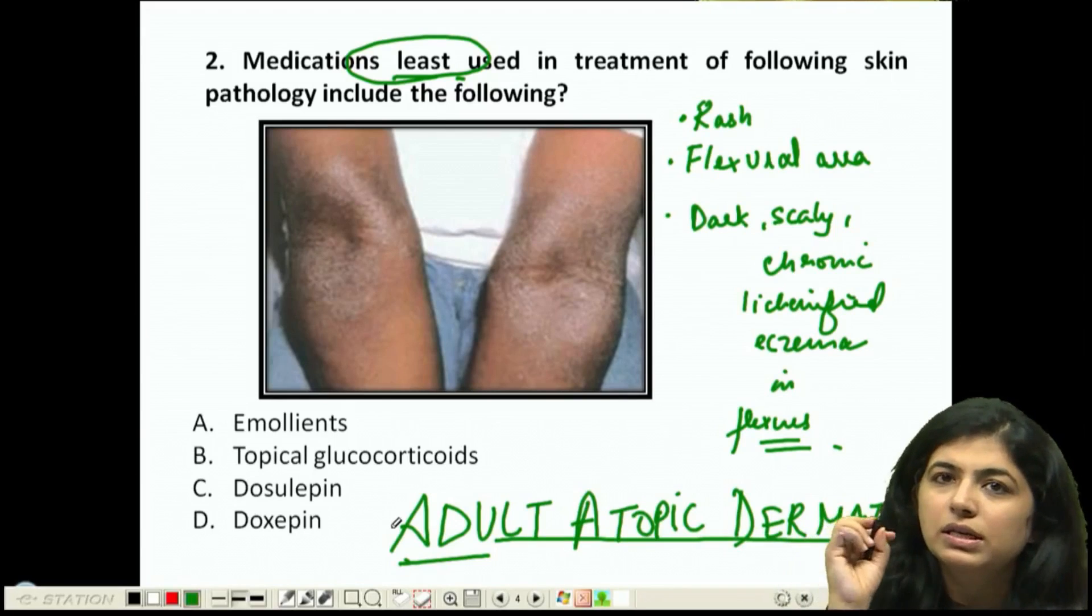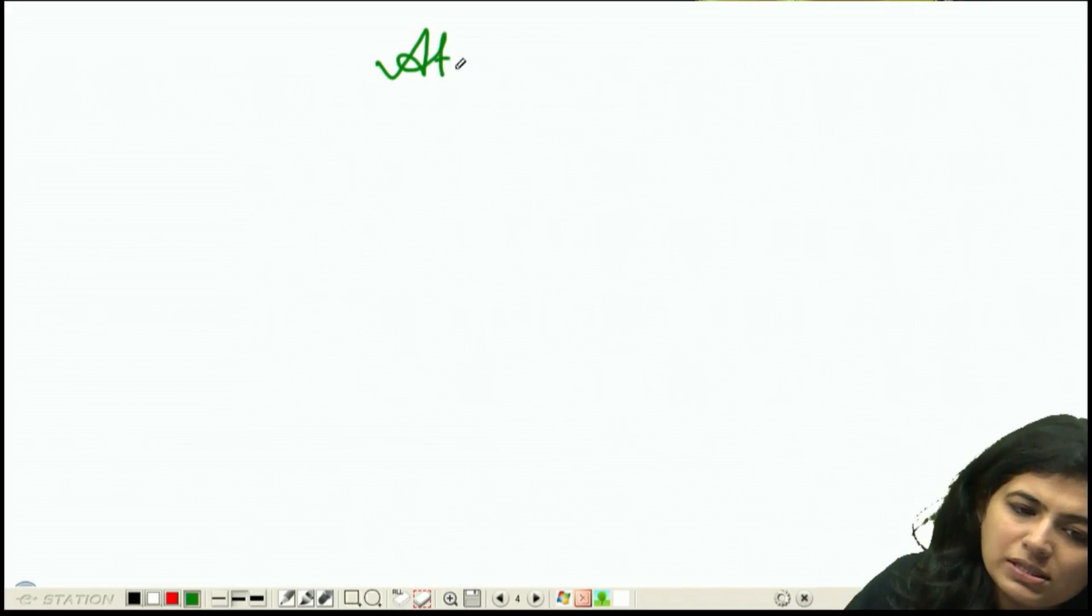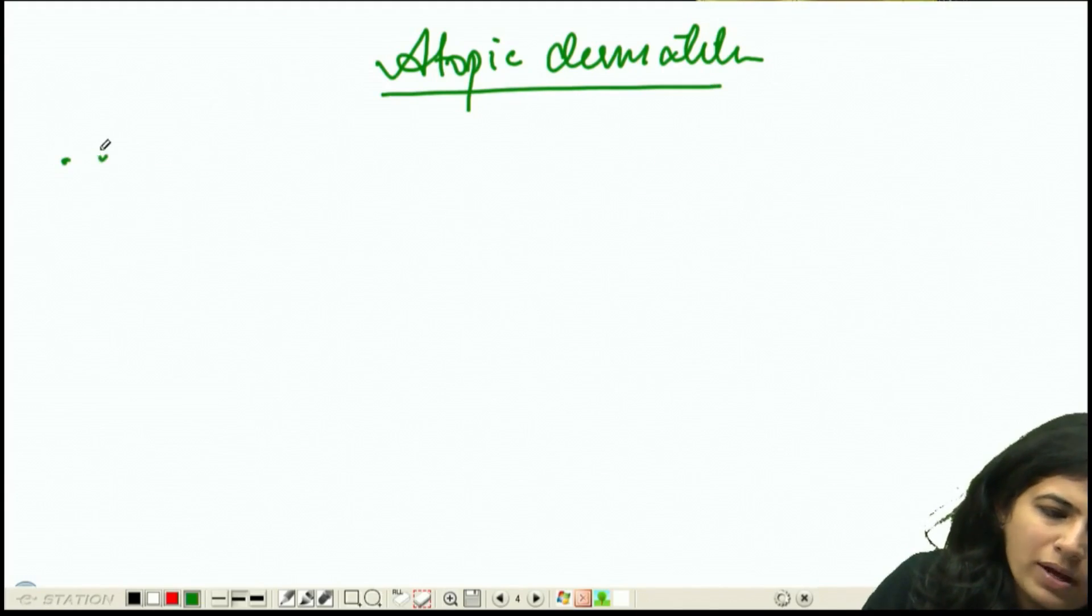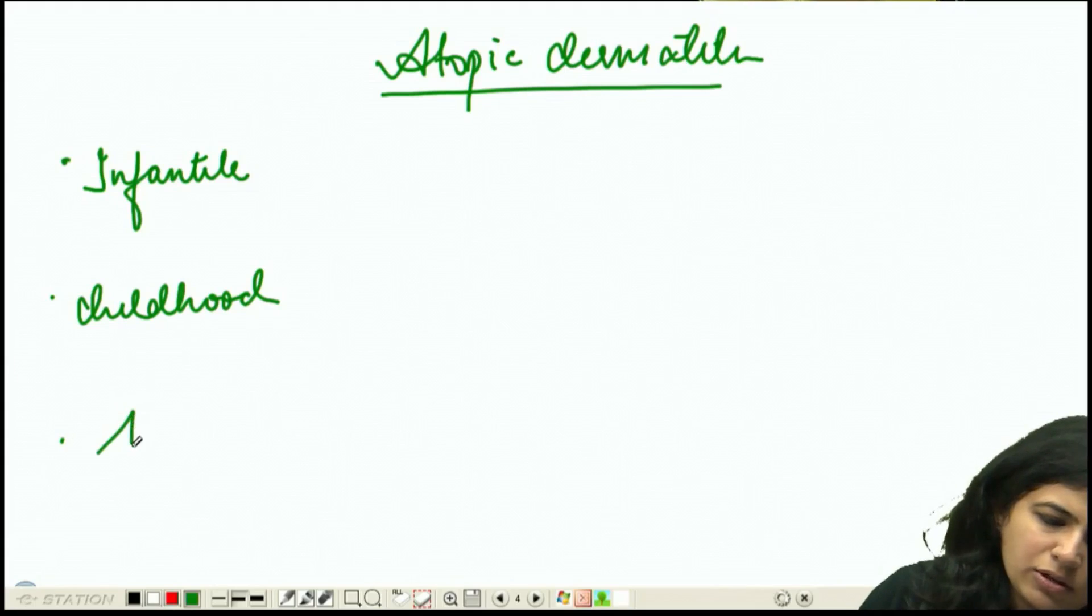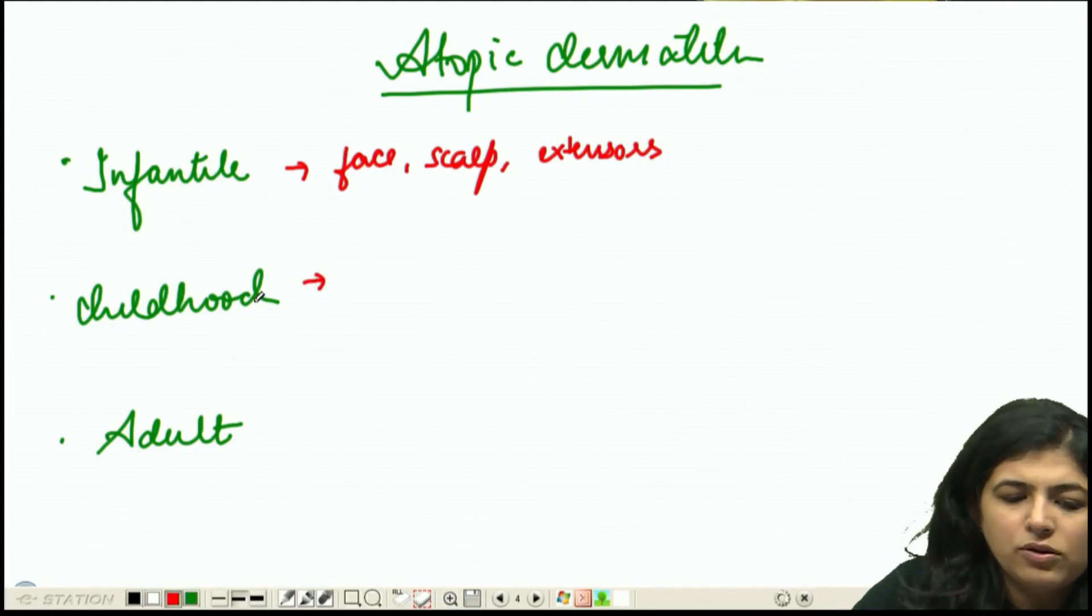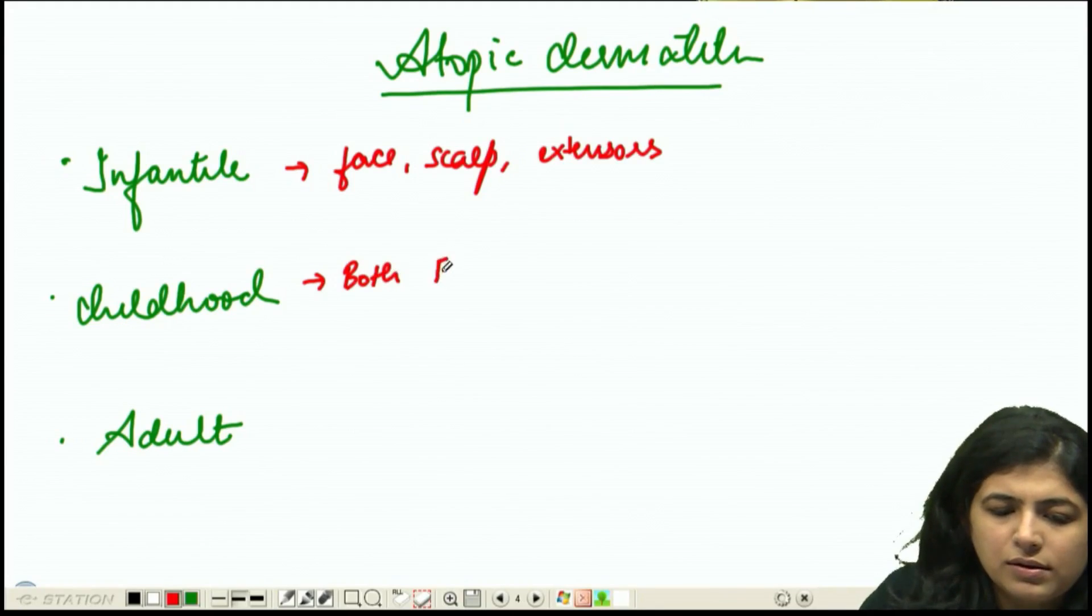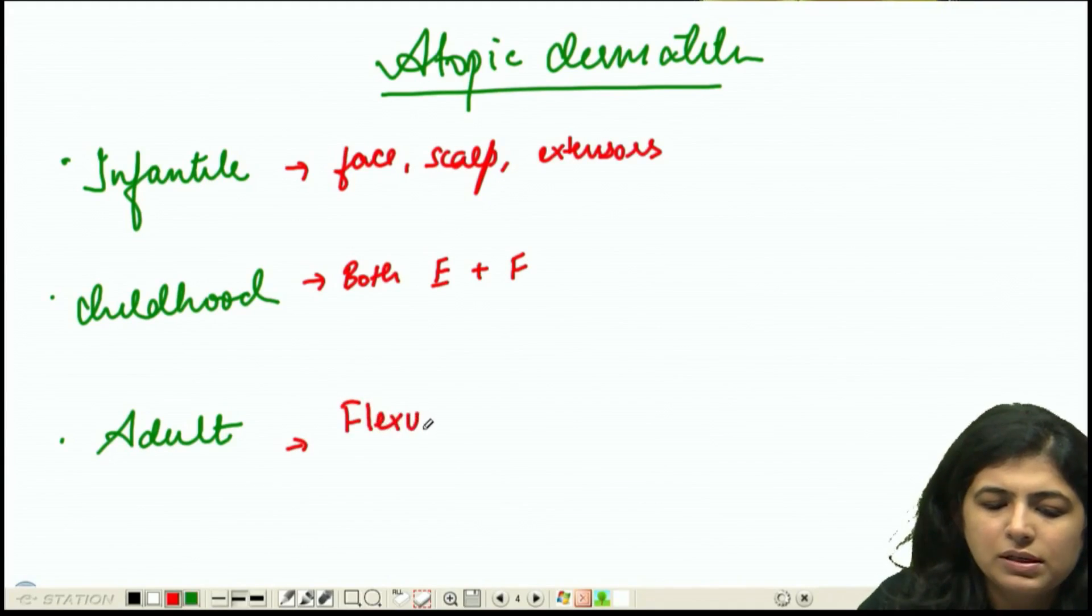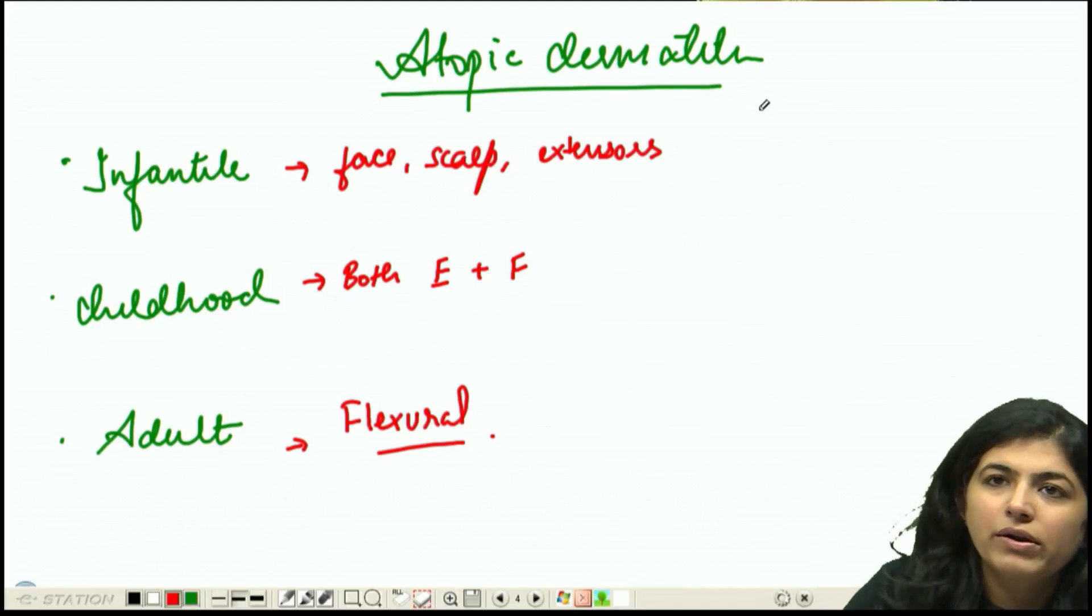I'll tell you three stages of atopic dermatitis so you can identify them. Infantile stage involves face, scalp, and extensors. Childhood stage has both extensor plus flexure. Adult stage is predominantly a flexural rash.